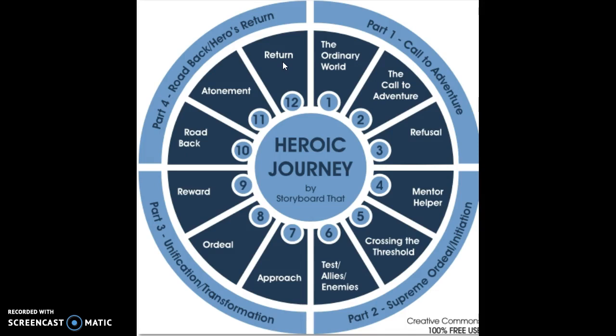Your job is to use this hero's journey wheel and consider this particular chapter of the Odyssey, which reveals the story of Polyphemus the Cyclops, and how that story reflects each element of the hero's journey. If you feel a part isn't included in this story, that's fine — you're welcome to explain that on the chart you'll be completing, similar to what we've done in class. I'm looking forward to the analysis you create. Let me know if you have any questions; I'm here to help on Thursday and Friday.